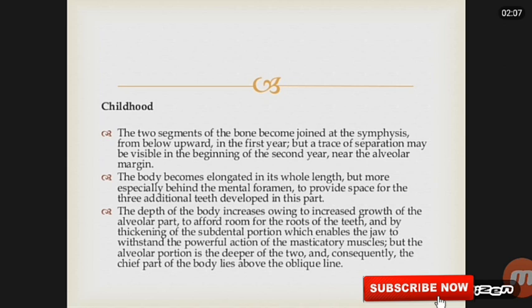The two segments of the bone become joined at the symphysis from below upwards in the first year, but a trace of separation may be visible in the beginning of the second year near the alveolar margin.